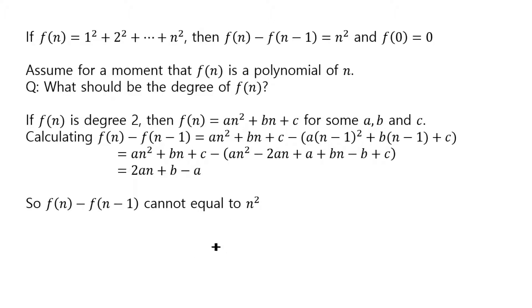But then you realize that, oh, if you'd start with degree 2, you get degree 1 polynomial. So maybe what we need to do is start with degree 3 to get a degree 2 polynomial at the end.